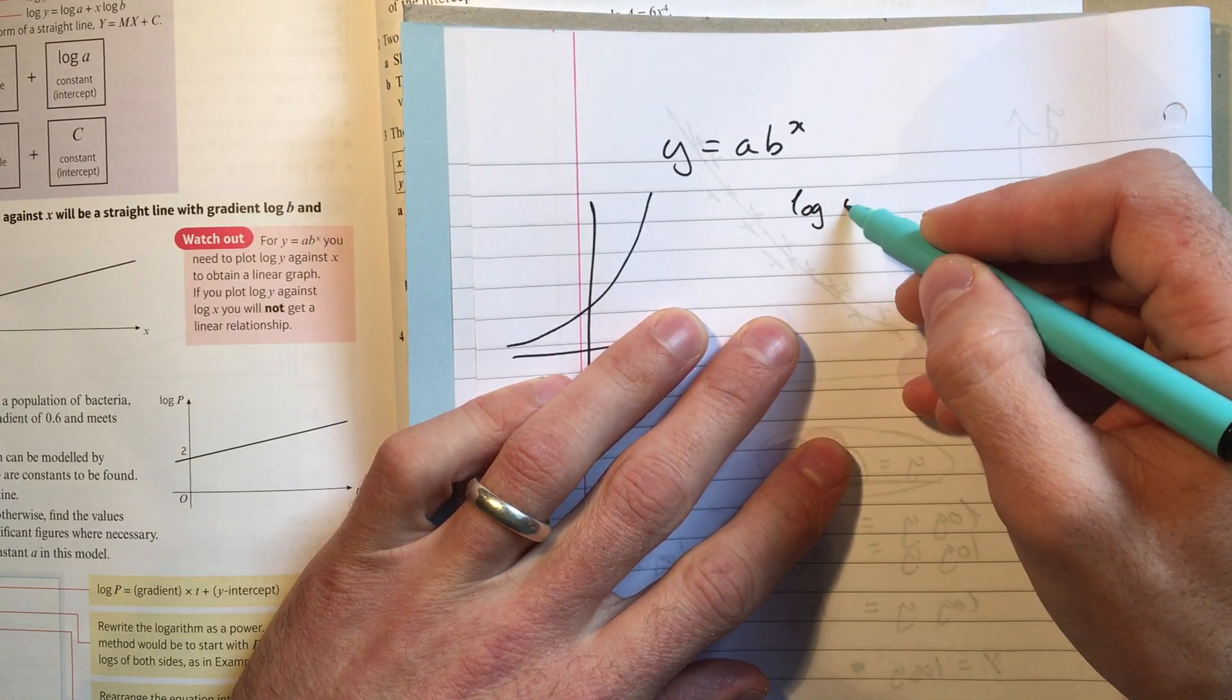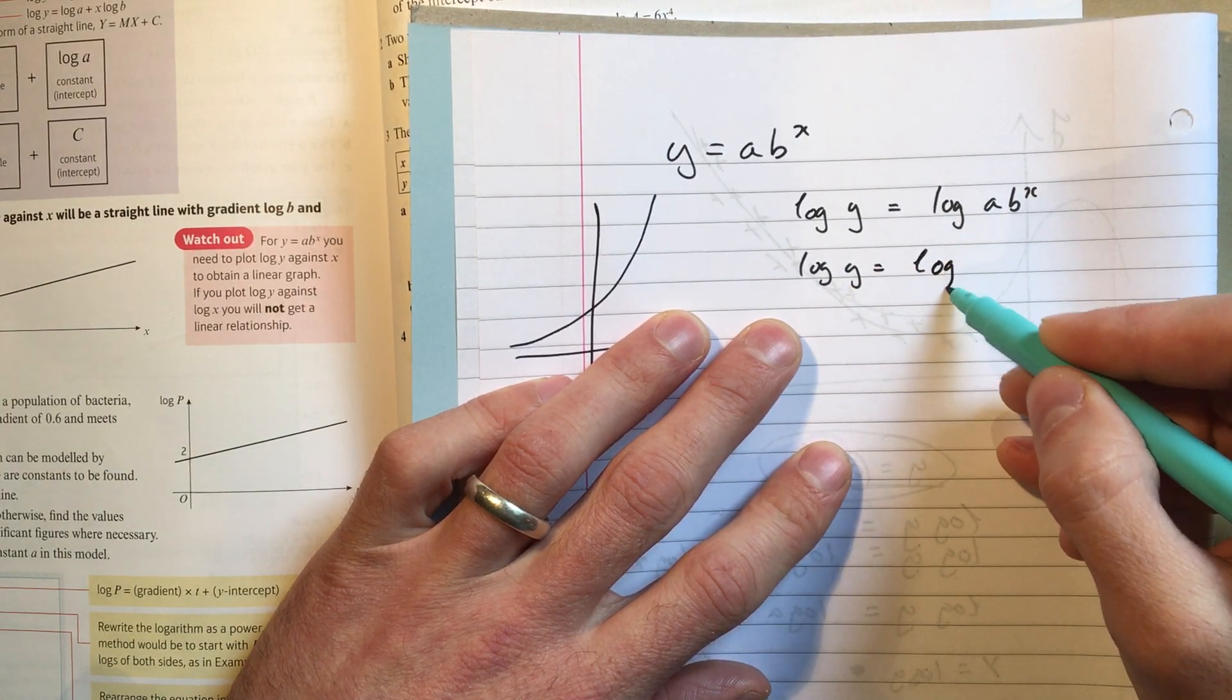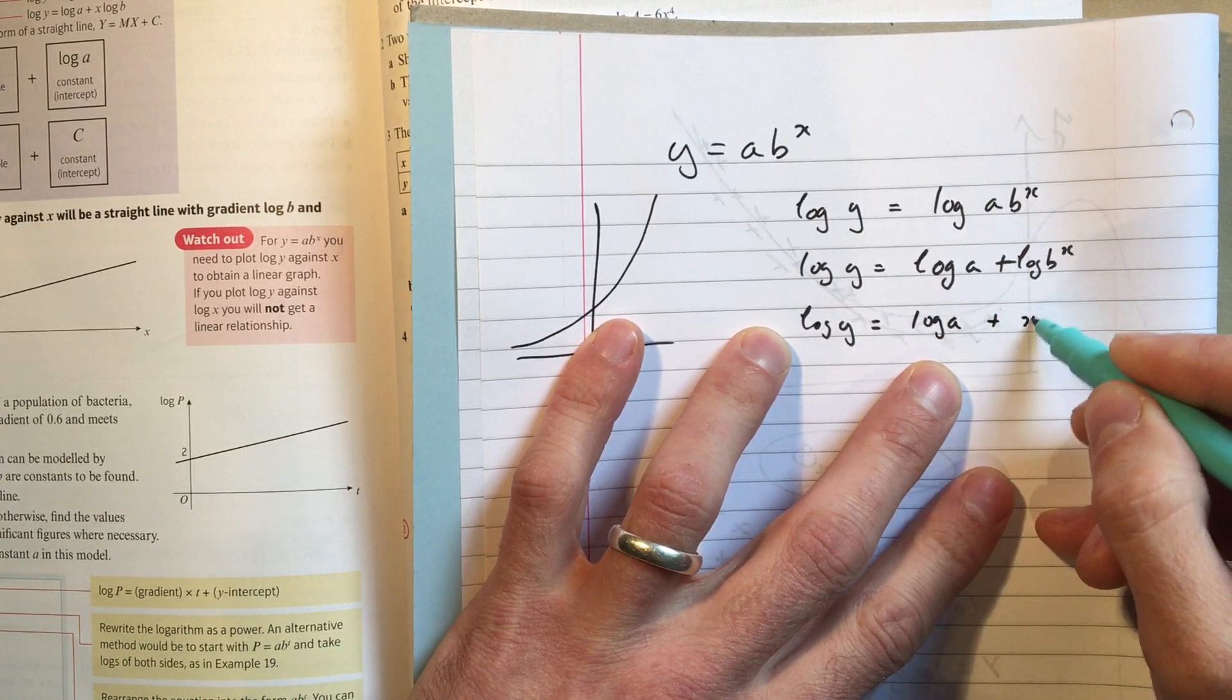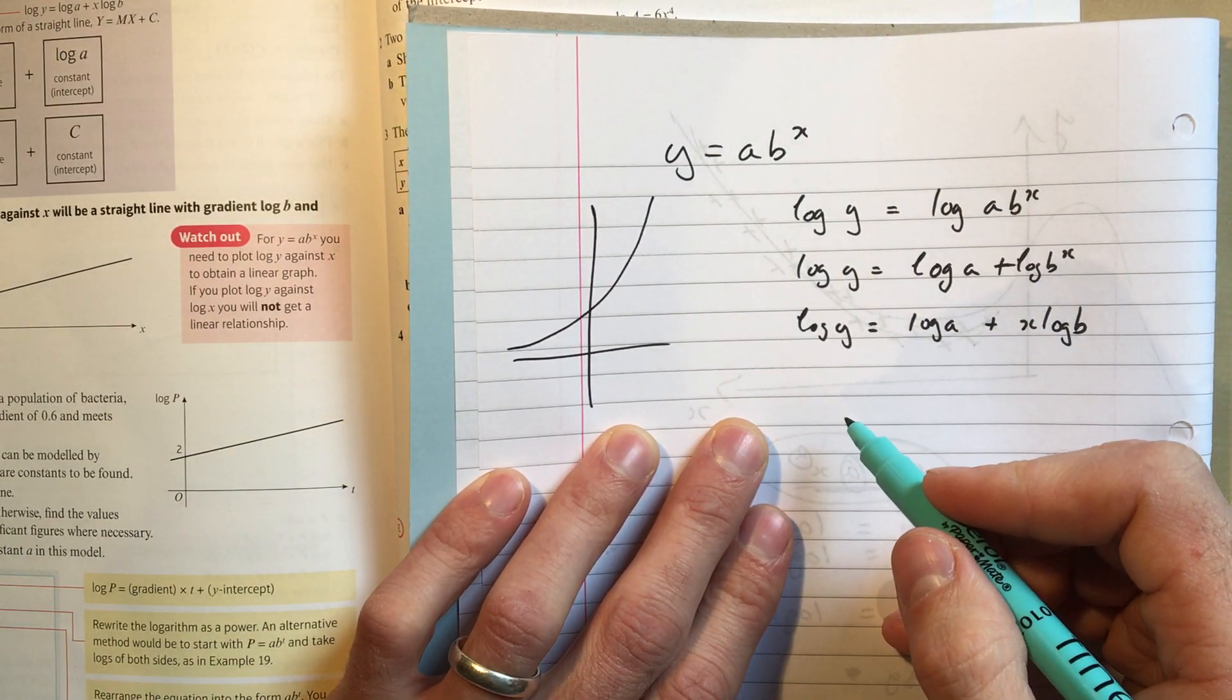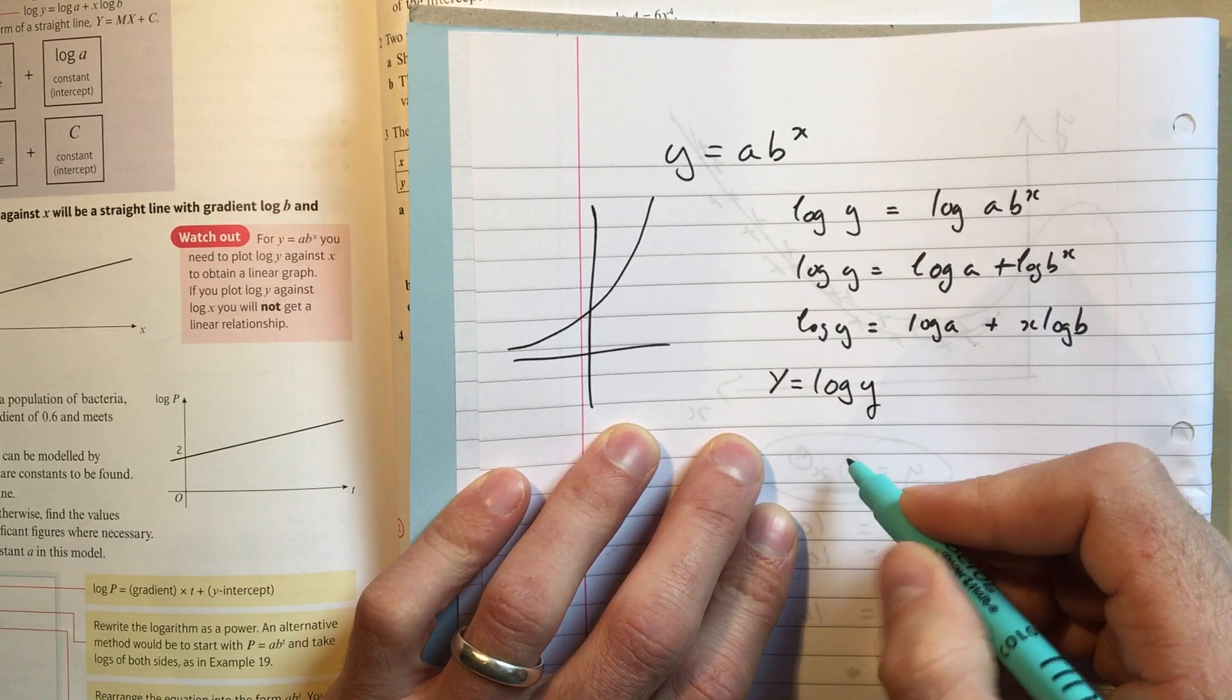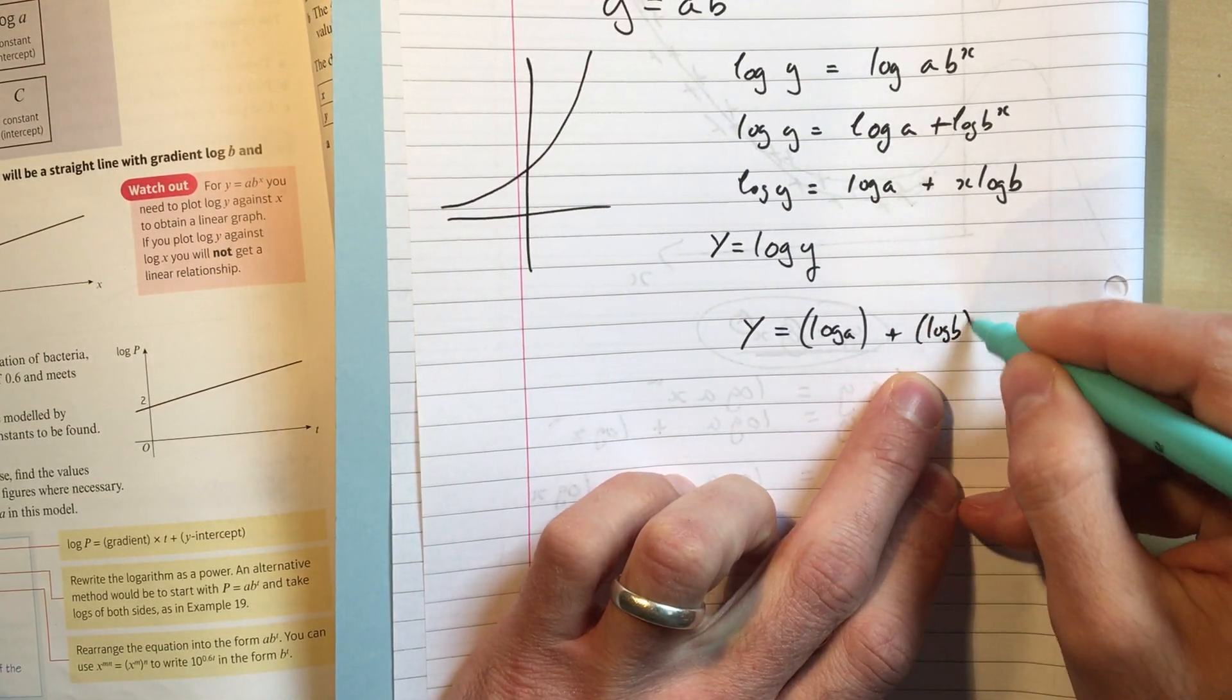Well, if I take logs on both sides, which maybe isn't a surprise this time, we're using the same tricks as before. So now, addition rule on this side, log y, and power rule on this side, log a plus x log b. And now, what I'm going to do then is I'm going to say, let big Y equal log of y. So this is Y equals log a, well, that is just a constant number, plus log b, that's just a constant number, times x.